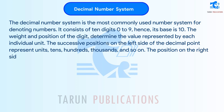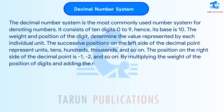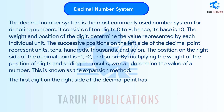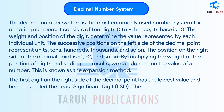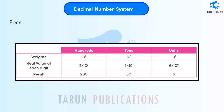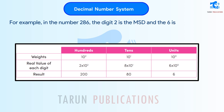The position on the right side of the decimal point is minus 1, minus 2, and so on. By multiplying the weight of the position of digits and adding the results, we can determine the value of a number. This is known as the expansion method. The first digit on the right side of the decimal point has the lowest value and hence is called the least significant digit (LSD). For example, in the number 286, the digit 2 is the MSD and the 6 is the LSD.